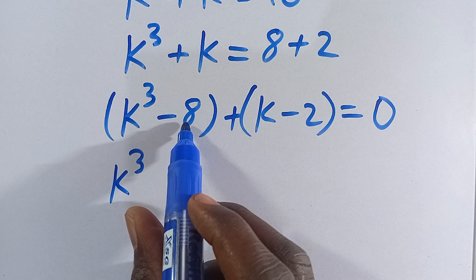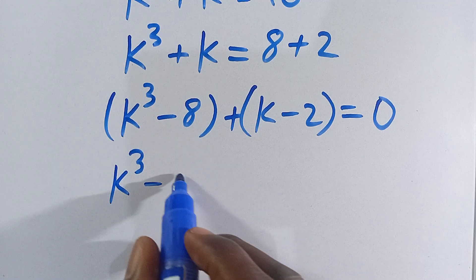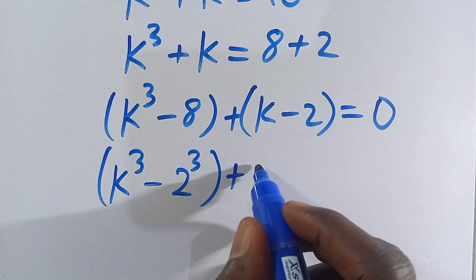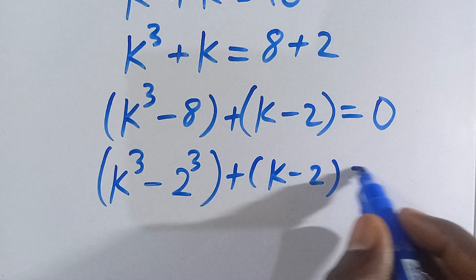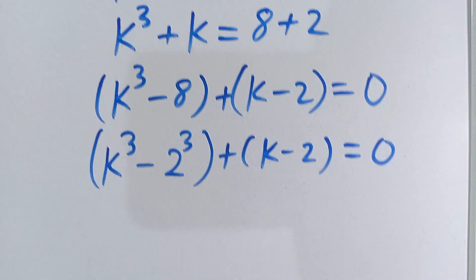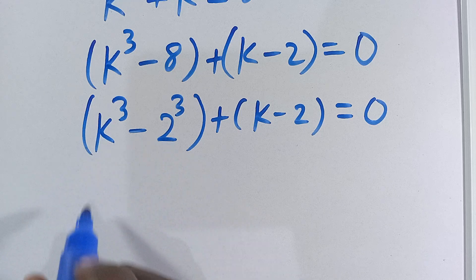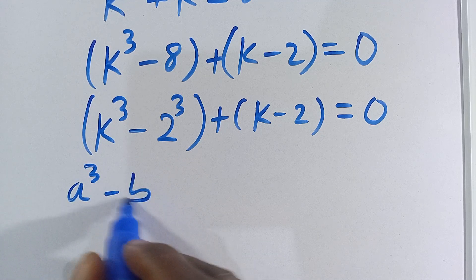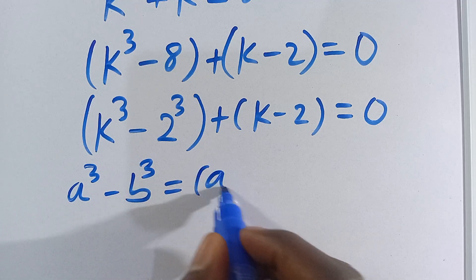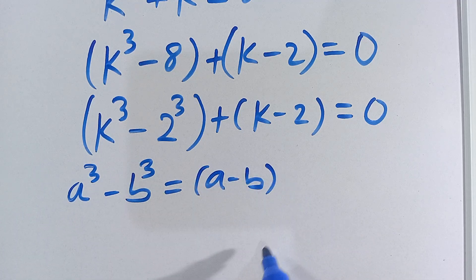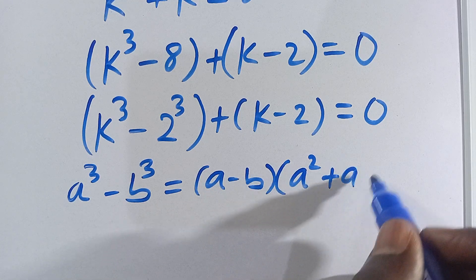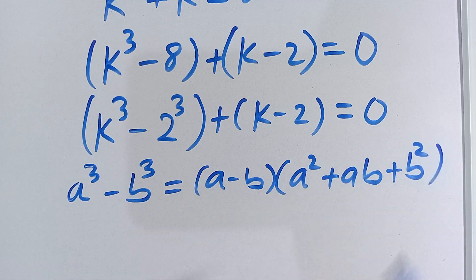We write 8 as 2 to the power of 3. So we have k³ minus 2³ plus k minus 2 equals 0. Now recall the difference of cubes identity: a³ minus b³ equals a minus b, multiplied by a² plus ab plus b².